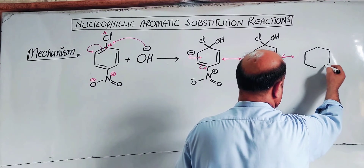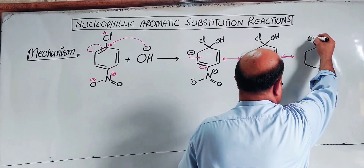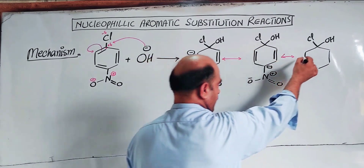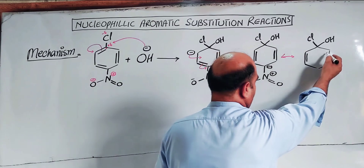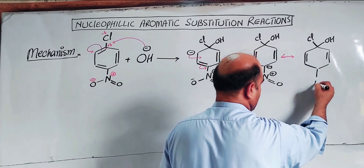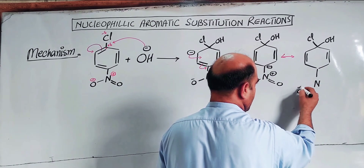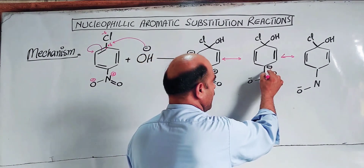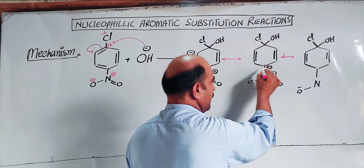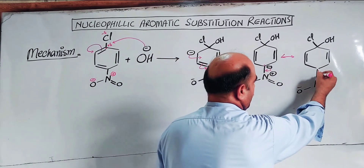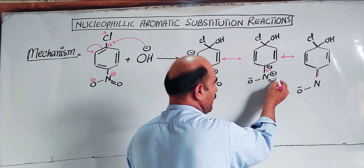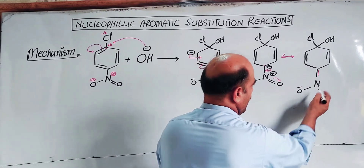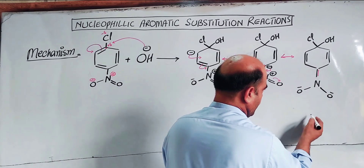The chlorine-OH bond is formed in the addition step. The electron shifts occur in the intermediate. The electrons form a double bond on the carbon, and the bond to the leaving group breaks. The electron breaks from the oxygen, creating a negative charge on the oxygen. Then the double bond reforms as the chloride leaving group departs, restoring aromaticity.